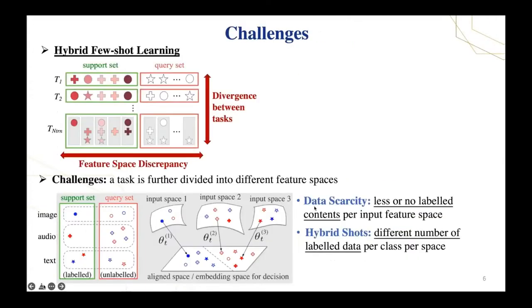What are the challenges in hybrid few-shot learning? The first difficulty is that since the few labeled samples in each task is further divided into multiple feature spaces, in each input feature space there would be less or no labeled samples for each class, which potentially escalates the general data scarcity and overfitting problem.